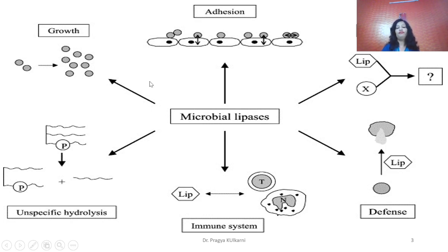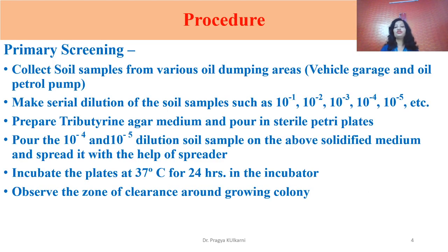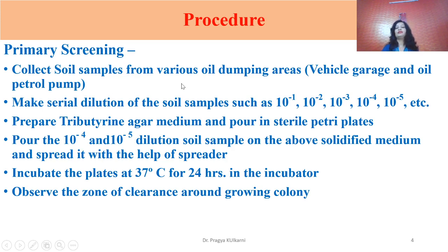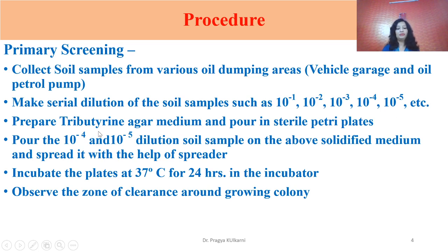Coming to the procedure, initially we have to screen bacterial or fungal cultures for primary screening, to identify whether the given culture has the potential for lipase enzyme production. Collect soil samples from various oil-dumping areas such as vehicle garages or petrol pumps, which ensure lipase activity in organisms. Make serial dilutions of soil samples from 10⁻¹ to 10⁻⁵.